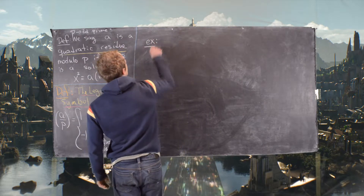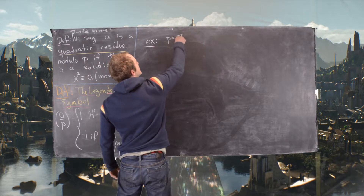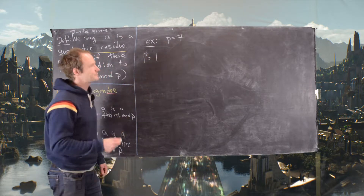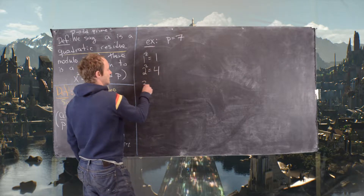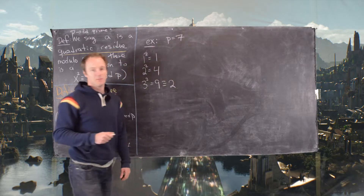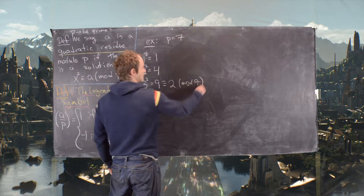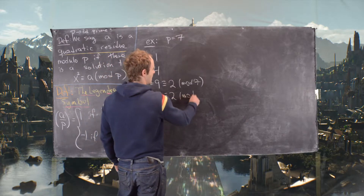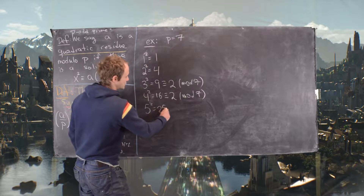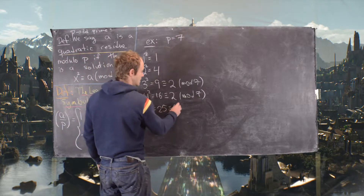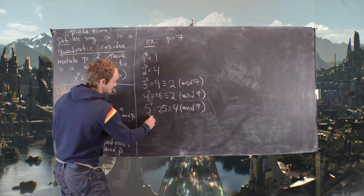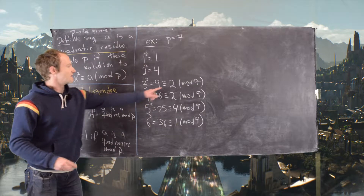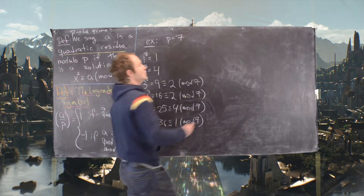Let's look at an example with p = 7. We calculate all the squares mod 7 of the numbers 1 through 6: 1² = 1, 2² = 4, 3² = 9 ≡ 2 (mod 7), 4² = 16 ≡ 2 (mod 7), 5² = 25 ≡ 4 (mod 7), and 6² = 36 ≡ 1 (mod 7).